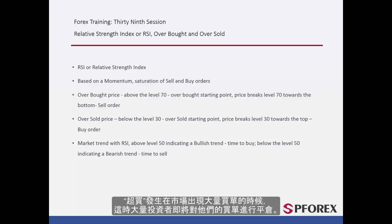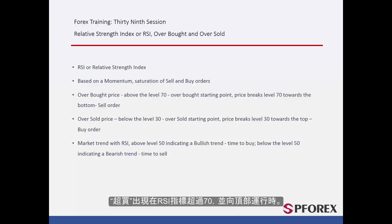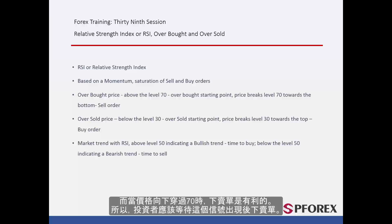Overbought is the time when there is an abundance of buy orders on a symbol, and a considerable number of traders are closing their buy orders. Overbought occurs when a trend in RSI passes the level 70 towards the top. Whenever price crosses level 70 towards the bottom, a sell order would be beneficial. Thus, a trader should wait for that moment to place a sell order.